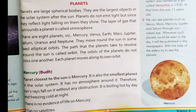There are eight planets in the solar system: Mercury, Venus, Earth, Mars, Jupiter, Saturn, Uranus and Neptune. They move round the sun in fixed elliptical orbits. The path that the planets take to revolve around the sun is called an orbit. The orbits of the planets do not cross one another. Each planet moves along its own orbit.